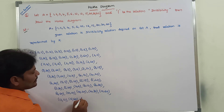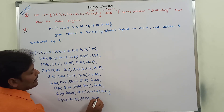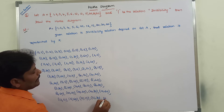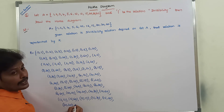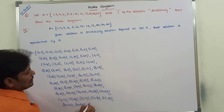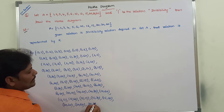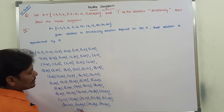Next element is 15: 15 divides 15. 15 does not divide 20. 15 divides 30 and 15 divides 60. Next element is 20: 20 divides 20. 20 does not divide 30. 20 divides 60. Next element is 30: 30 divides 30. 30 divides 60. Next element is 60: 60 divides 60.